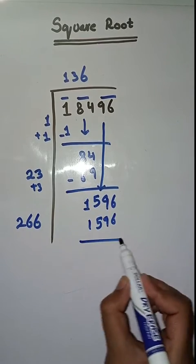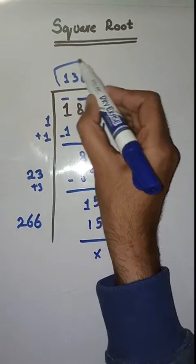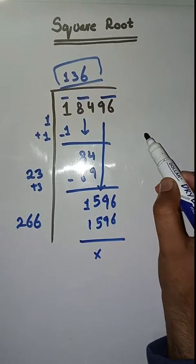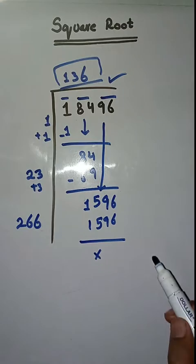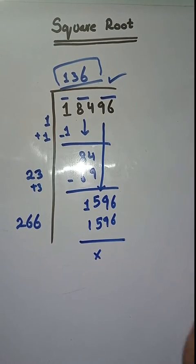So it's completely solved. Square root of 18,496 is 136. Hopefully you like this video. If you really did, please like, share, and subscribe my YouTube channel. If you have any question you can ask in comment section. Thank you.